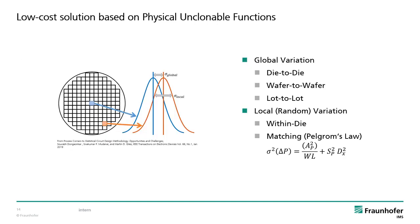For semiconductor integrated physical unclonable functions, the very small variations in the manufacturing process are used as a random source. These variations can be divided into global and local variations. Global variations can be categorized into die-to-die, wafer-to-wafer, or lot-to-lot variations — they contain some random portion but also likely have systematic differences. Local variations of devices with much smaller distance can be predominantly seen as random and can therefore be used as an entropy source for device authentication or key generation. These random variations are mainly determined by the matching parameters of integrated components like transistors, resistors, or capacitors.